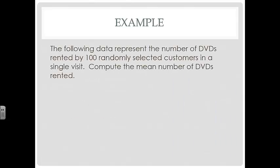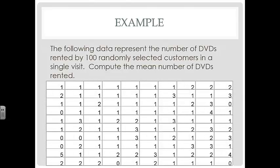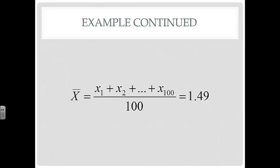Now, the following data represent the number of DVDs rented by 100 randomly selected customers in a single visit. Compute the mean number of DVDs rented. Here's all of our data, and we can plug that into the calculator and find our mean, and we get 1.49, which happened to be the same as our probability distribution.